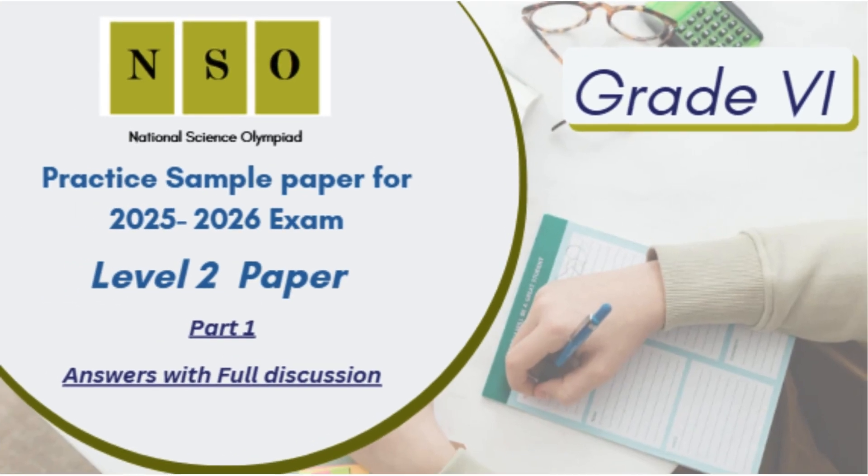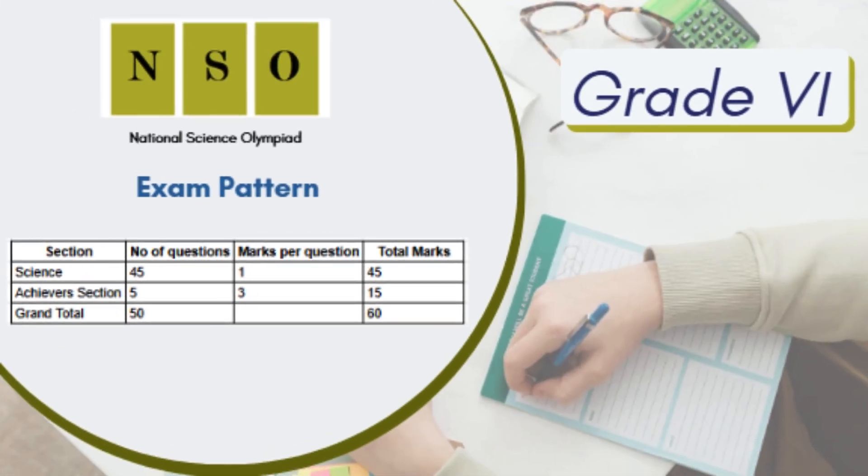Hello everybody. Today on the platform of Indian Online School, we have come up with another paper of Grade 6, Level 2. Before I start with the discussion of this paper, let me brief you about the questions and the marking pattern. In this Level 2 paper, you have a total of 50 questions. The first 45 questions carry one mark each, all from your science, and the last part is the achiever section that has 5 questions, 3 marks each, that is 15 marks. So total 45 plus 15, that is 60 marks in this question paper. Let's start with the discussion of the paper.